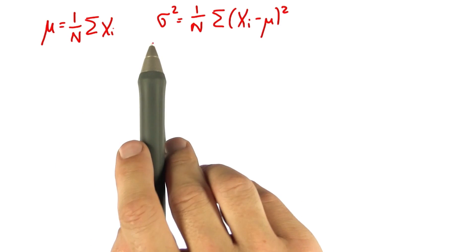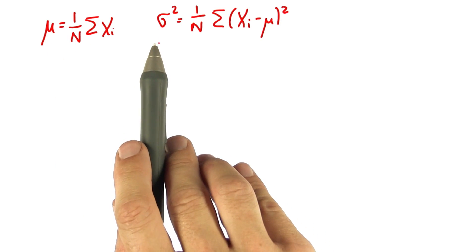Here are our equations again for the mean and the variance, and they should now look very familiar.